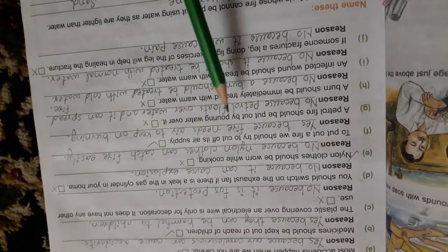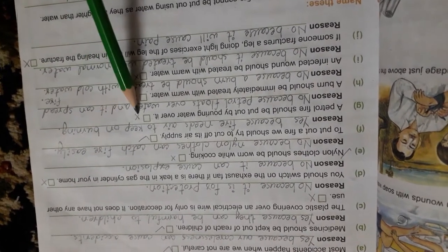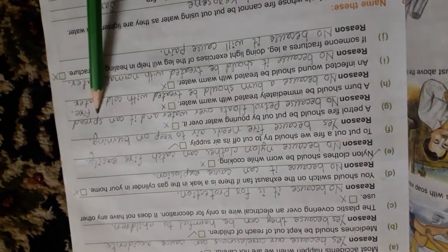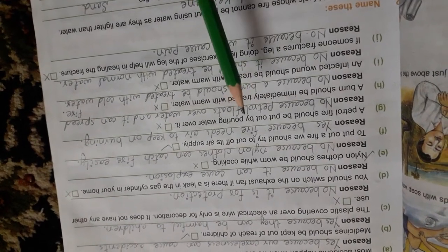A petrol fire should be put out by pouring water over it. If petrol is burning from fire, we should put it in water. No. Cross. Because petrol floats over water and it can spread fire. Petrol is lighter than water. It floats above water and the fire will grow.